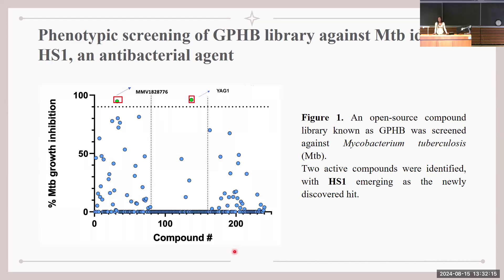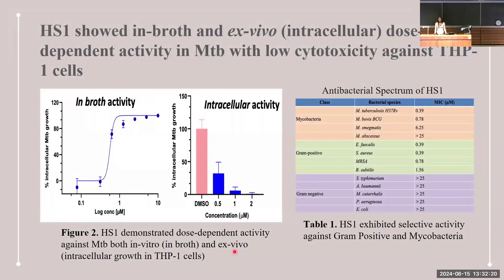HS1 exhibits potent activity against MTB, demonstrated through dose-dependent intracellular and broth activity. We tested the cytotoxicity of HS1 across three different cell lines and found it was non-toxic to mammalian cells. We also tested its antibacterial activity across a range of bacterial strains and found it is selective against gram-positive and mycobacterium species but not gram-negative bacteria.